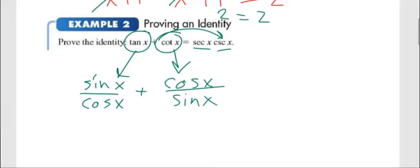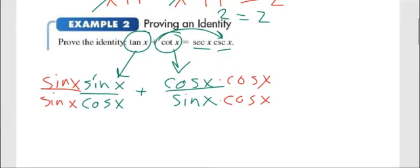Do they have the same denominator? No. Nope. So we've got to get common denominators. So the denominators don't have anything in common. Therefore, what must we do? Multiply them together. Right. So this one's going to get sine x to the top and the bottom. And this one's going to get cosine x to the top and the bottom.